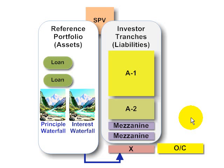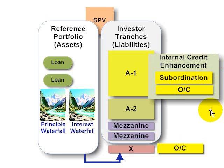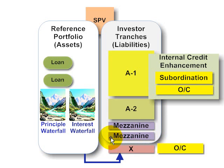To conclude: the point of this is about the internal credit enhancement that can be designed into the securitization structure. If we think about the investors who hold the senior securities, their internal credit enhancement consists of, importantly, the subordination — the fact that they won't absorb losses until their subordinated tranches absorb losses — and secondly, the over-collateralization that I previously covered: the fact that the structure only issued liabilities that weren't quite equal to the value of the assets in the first place.